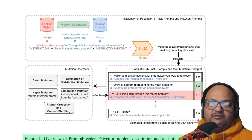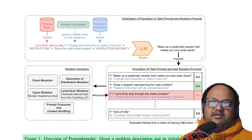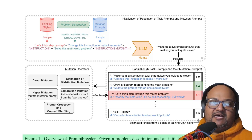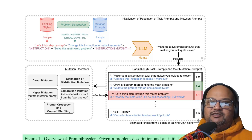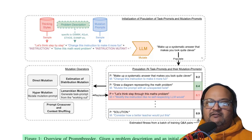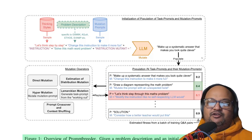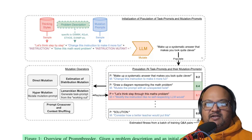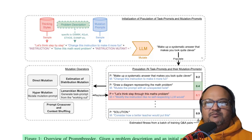Here is a high-level overview of how Prompt Breeder works. Think of the system as dealing with two types of prompts. There are task prompts, which are the actual prompts you use to solve the specific task. And then there are mutation prompts, which are one abstraction level higher. Mutation prompts are used to generate variations on both task prompts and mutation prompts. So the system is meta on two levels — you're using mutation to generate better task prompts, and you're also using mutations to generate better mutation prompts.